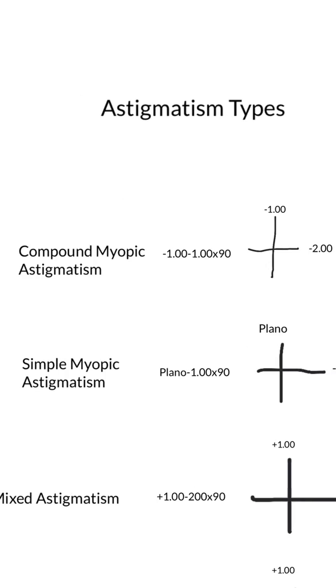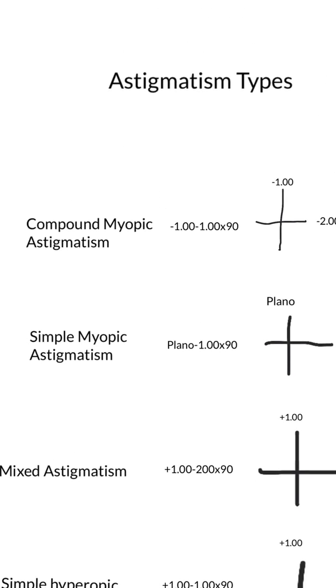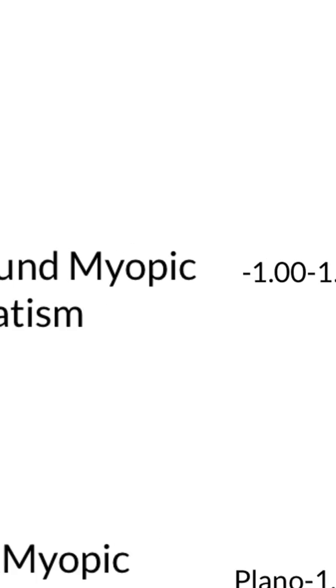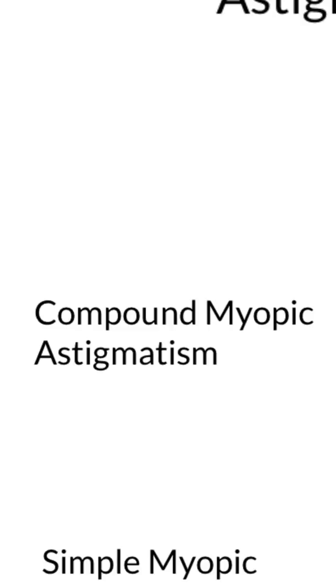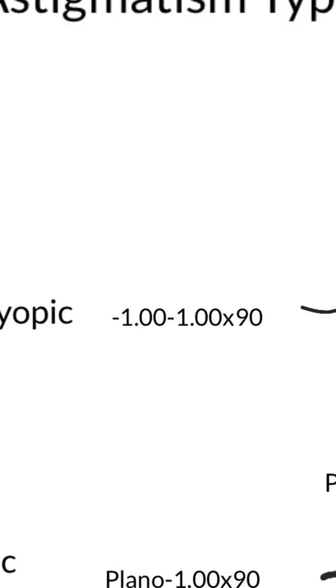There are five different types of astigmatism. The first one is compound myopic astigmatism. Here is an example prescription for compound myopic astigmatism. It makes sense because when you have myopia you have a minus eyeglass prescription, so with compound myopic astigmatism you have two minus numbers.